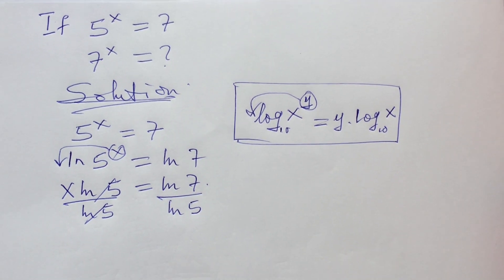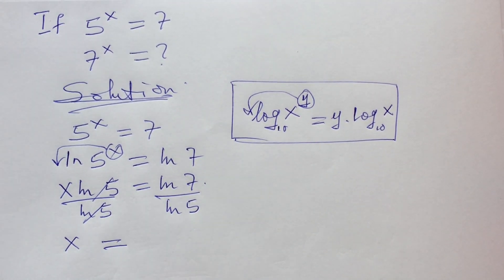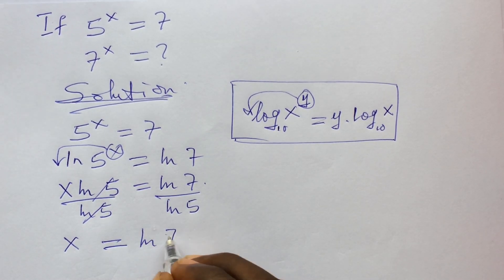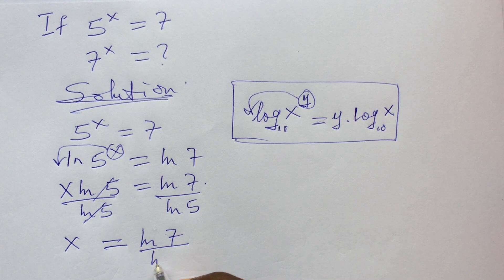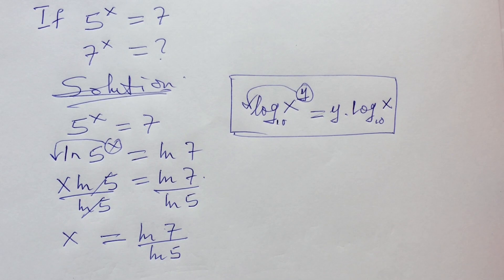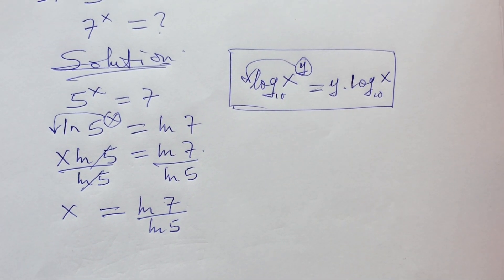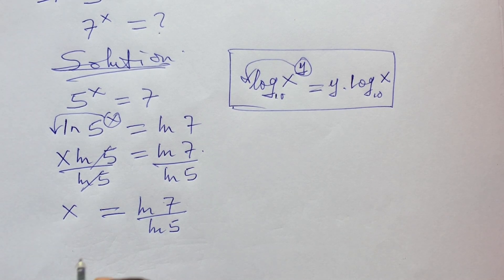The ln(5) terms cancel on the left, leaving x on its own, so x equals ln(7) over ln(5). At this point we use our calculator. ln(7) gives us approximately 1.9459.